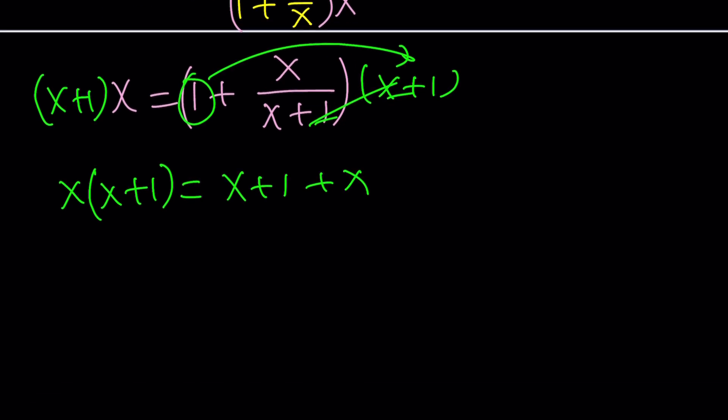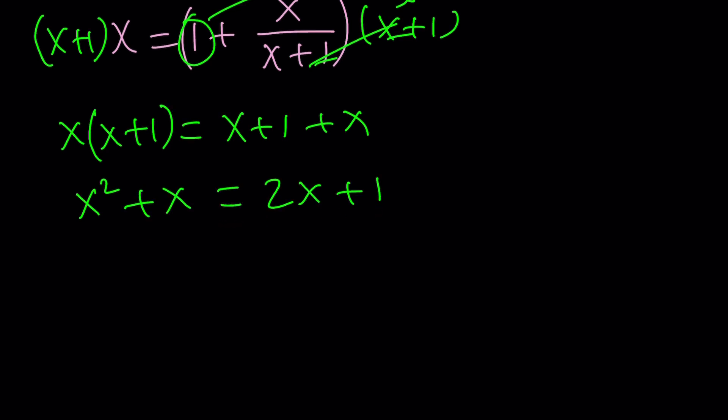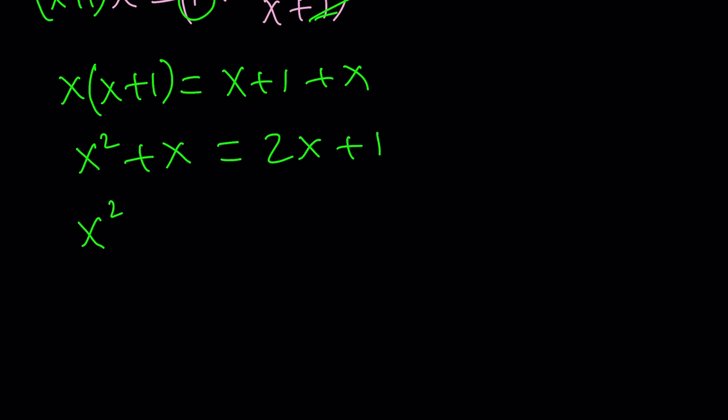You see, it's a lot easier than dealing with denominators. This gives us x squared plus x and this is 2x plus 1. Let's go ahead and put everything on the same side. x squared minus x minus 1 equals 0. Now, you should be familiar with this equation, especially if you dealt with Fibonacci series, golden ratio, and stuff like that before.